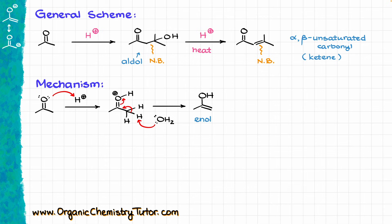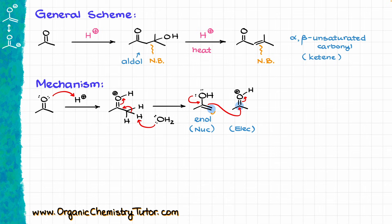At this point, this is just simple keto-enol tautomerism in acidic conditions. We know that enols are nucleophilic and carbonyls, like our starting material, are electrophilic — and especially so in acidic conditions where some of the carbonyl is protonated, making it an even stronger electrophile. Since we have a nucleophile and an electrophile in the same system, they naturally react with each other. The alpha position of our enol reacts with the carbonyl carbon of the same molecule, forming a new carbon-carbon bond, and we end up with the protonated aldol.